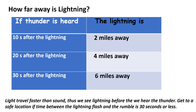If you can hear the thunder 20 seconds after the lightning, the lightning is four miles away. Light travels faster than sound — thus we see lightning before we hear the thunder. If the time between the lightning flash and the rumble is 30 seconds or less, you have to look for a safe location.